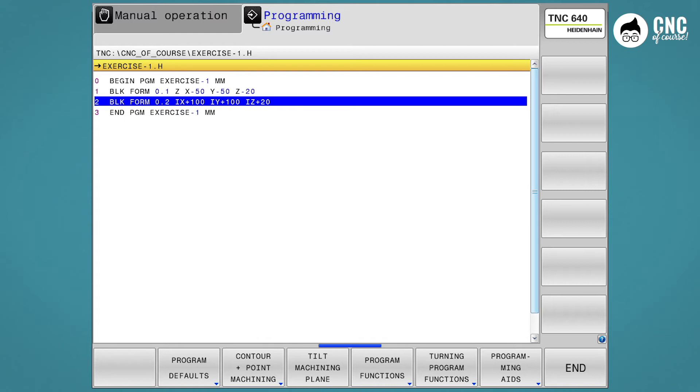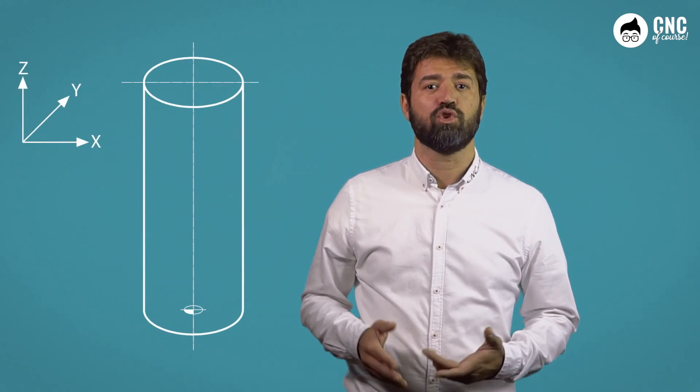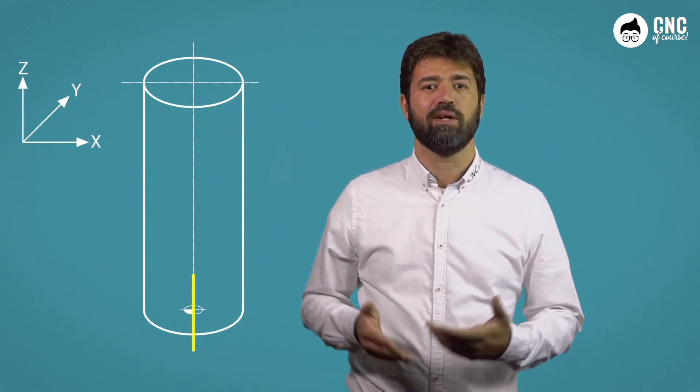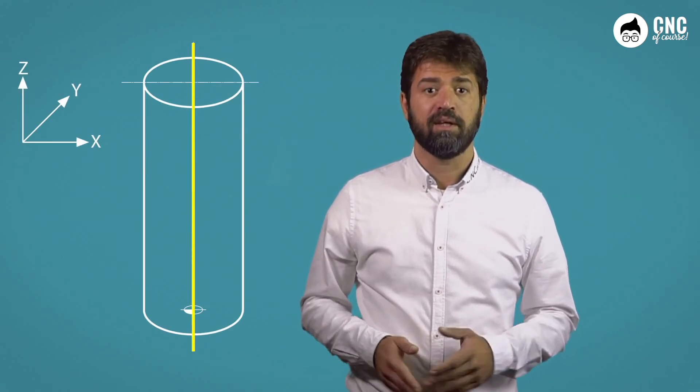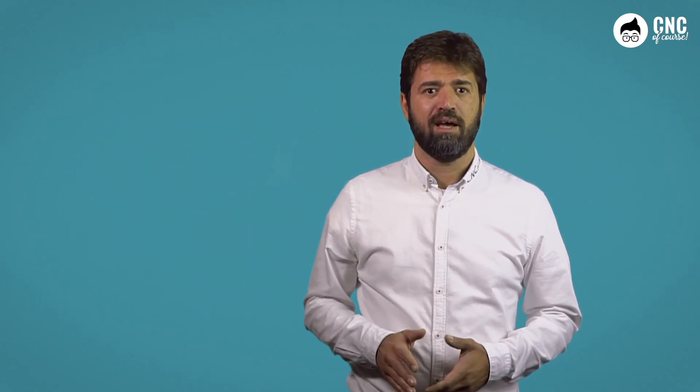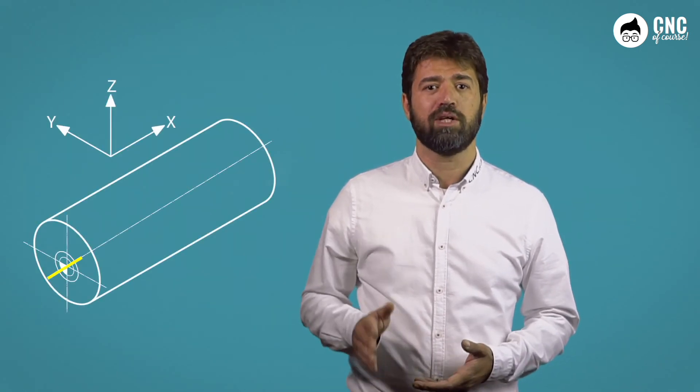On the other hand, it may happen that your blank does not have this shape but is a cylinder. If the NC available to you is a 640, you can still define it. The first element required is again the axis, but in this case it will be the axis around which your cylinder develops. If you select the Z axis, you will define a cylinder whose face is on the X and Y plane. If you select the X axis, you will have a cylinder with its face on the Y and Z plane.